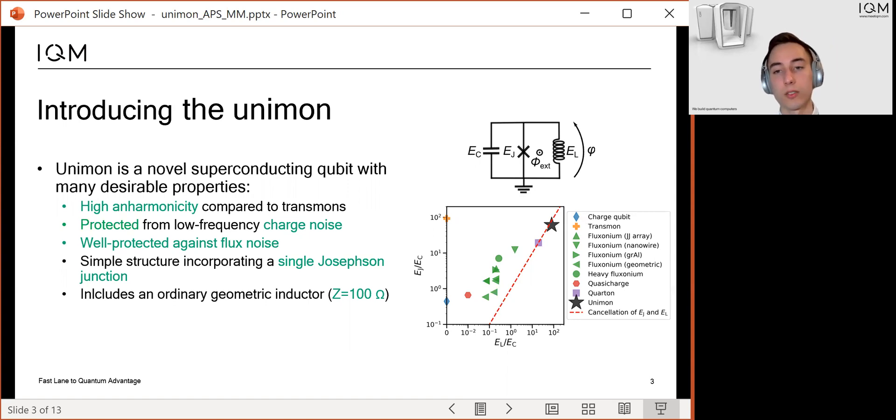Now, similarly to some existing superconducting qubit types, the Unimon can be roughly described with the circuit containing a capacitor, an inductor, and a Josephson element in parallel. However, the Unimon is located in a new regime of the periodic table of superconducting qubits.